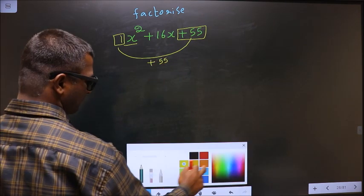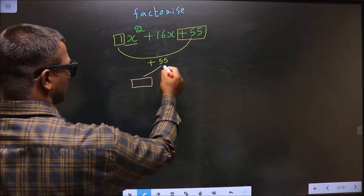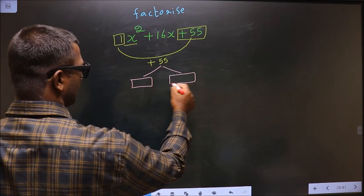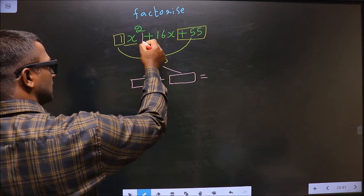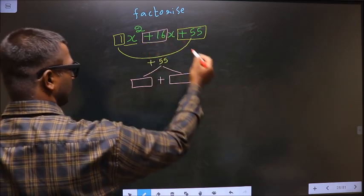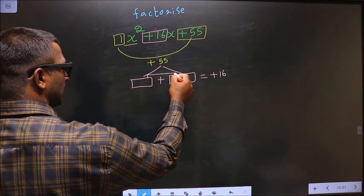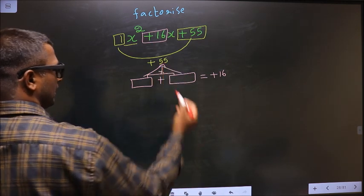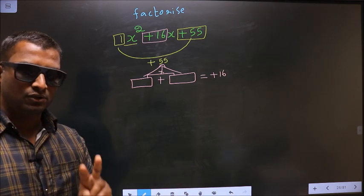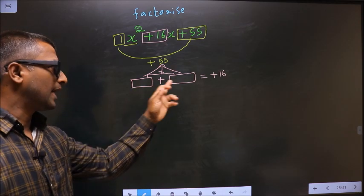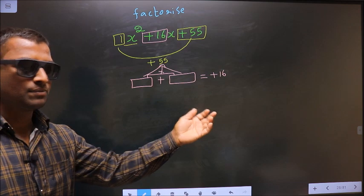Now you should look out for two numbers such that when you add these two numbers you should get the middle coefficient, that is plus 16, and also when you multiply these two you should get plus 55.